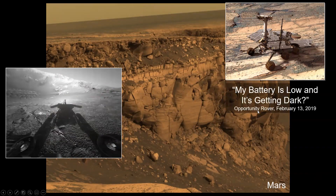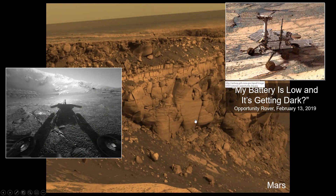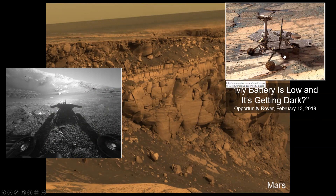which landed on Mars in 2002-2003. It was supposed to only survive on the surface of Mars for about 90 days. But it lasted 17 years — it would rove around on the surface of Mars. When we get to the section on Mars, we'll show lots of images that were collected by this very resilient rover.